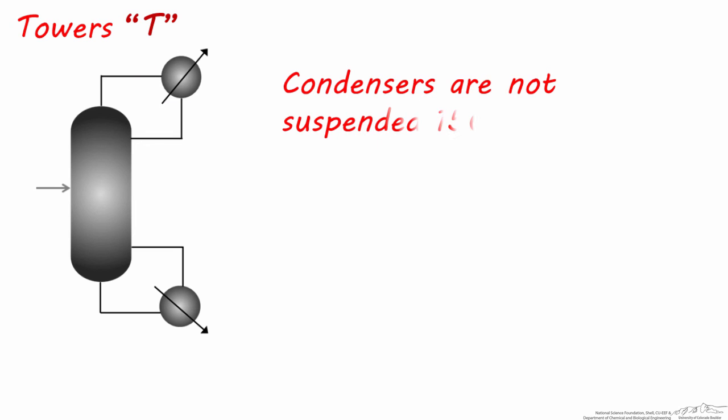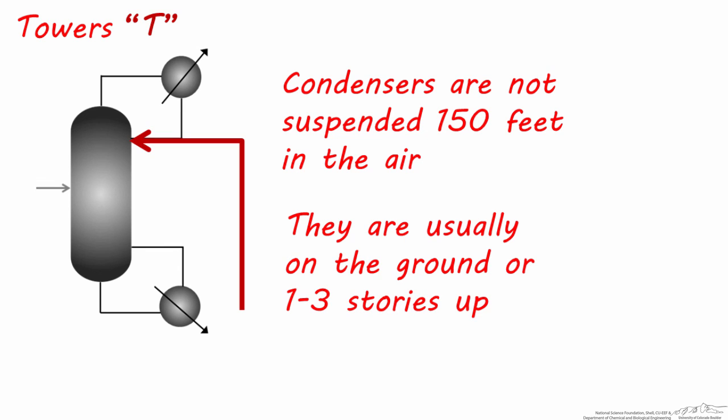For some very tall columns, this would mean that they would be mounted on supports 150 to 200 feet in the air. Not only is this dangerous and makes the unit difficult to access and service, but it's also unnecessary because reflux can be pumped back up to the top of the column fairly easily. So many very large condensers, such as the ones that are in refineries, are either on the ground or to save on space, elevated 1 to 3 stories, but not much higher.